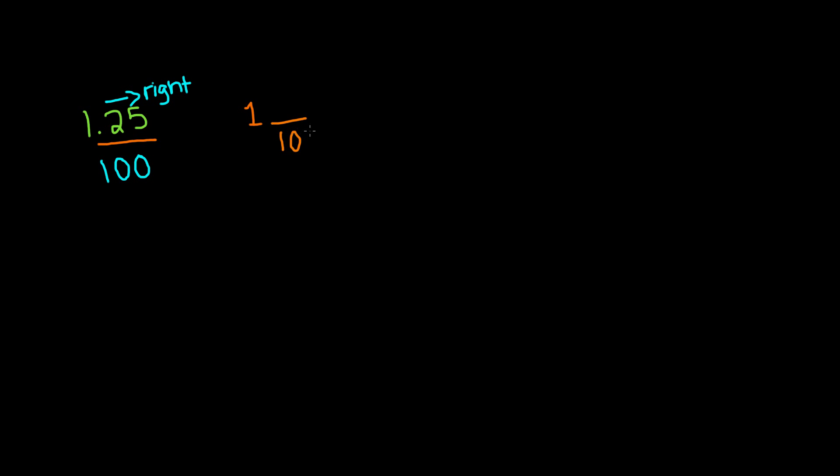So remember, the decimal point stands for the number 1. And the number of digits that come to the right side of the decimal point, we're going to count them as zeros. So 2 and 5 are two digits, so we're going to have two zeros — which gives us 100. So 100 is going to be our denominator.